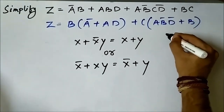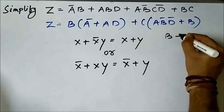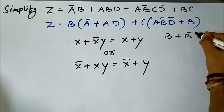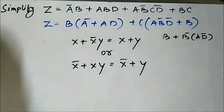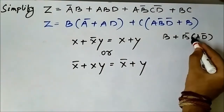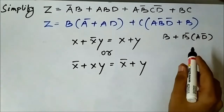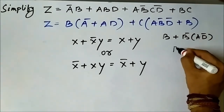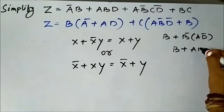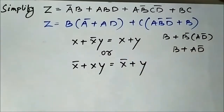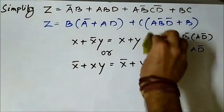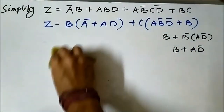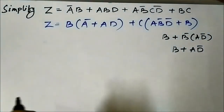For the second group, we have b + a·b̄·d̄. We can visualize this as b + b̄·(a·d̄), treating a·d̄ together. Applying the same rule x + x̄·y = x + y, it becomes b + a·d̄. So applying both rules, we get b·(ā + d) + c·(b + a·d̄).